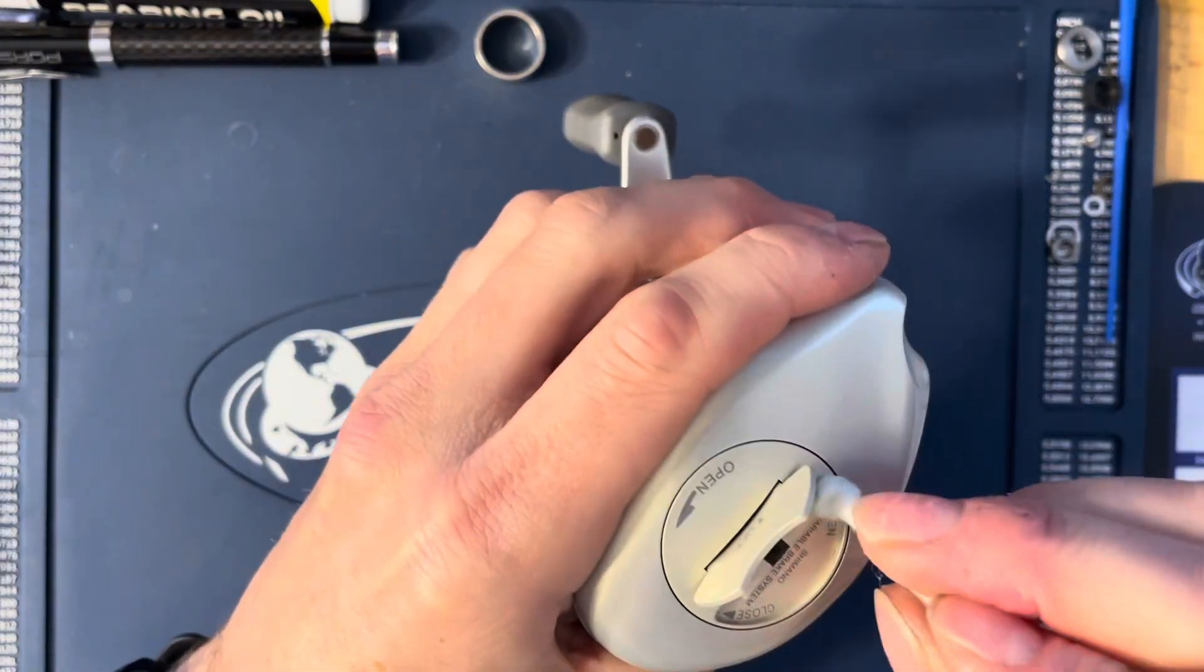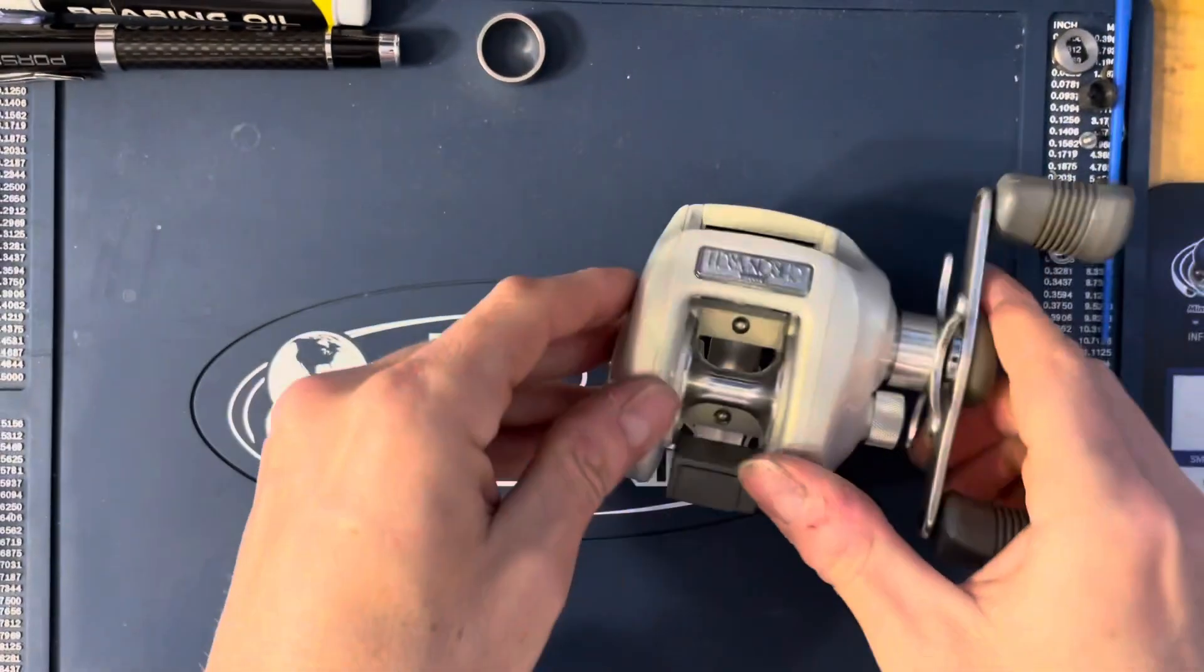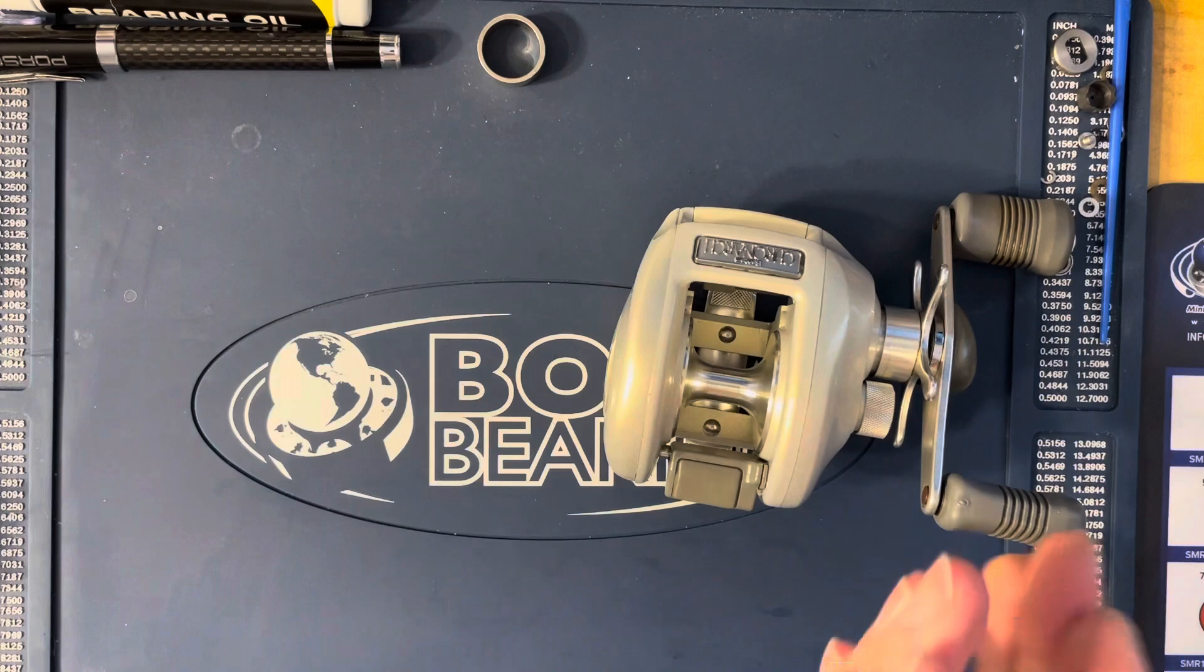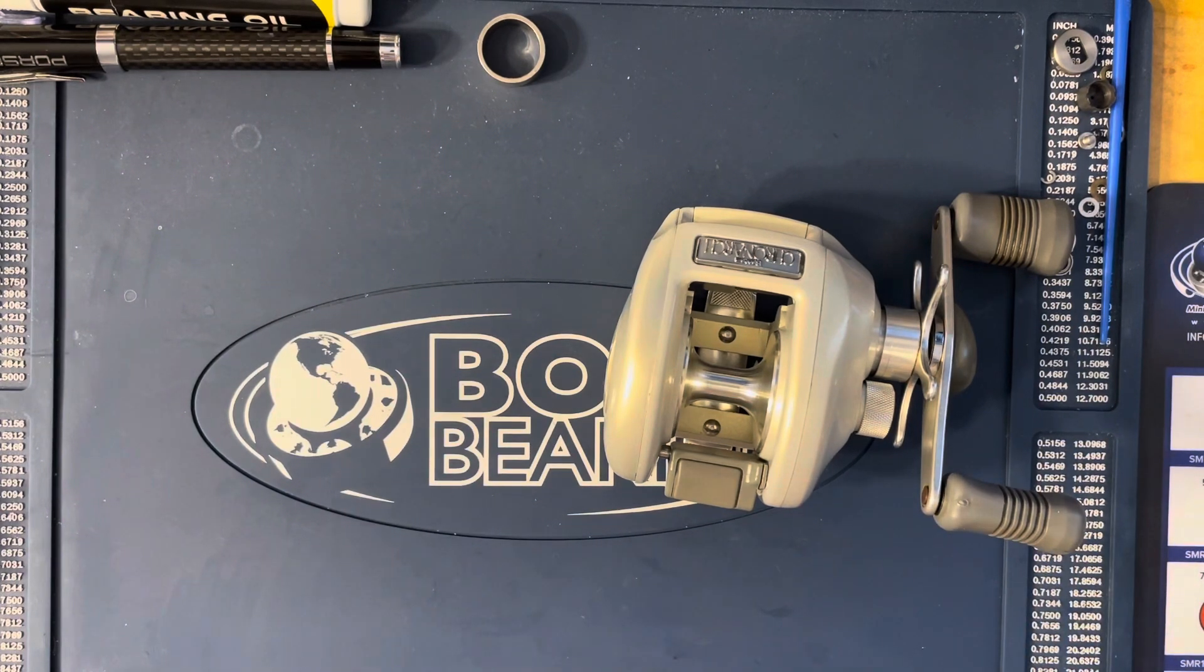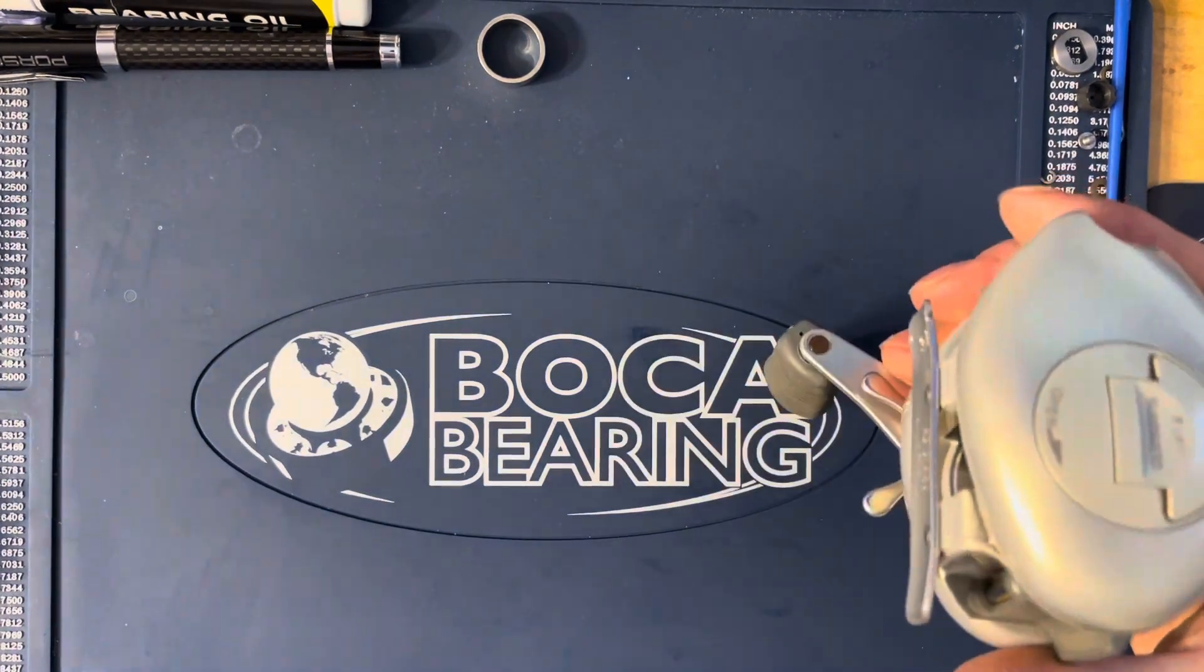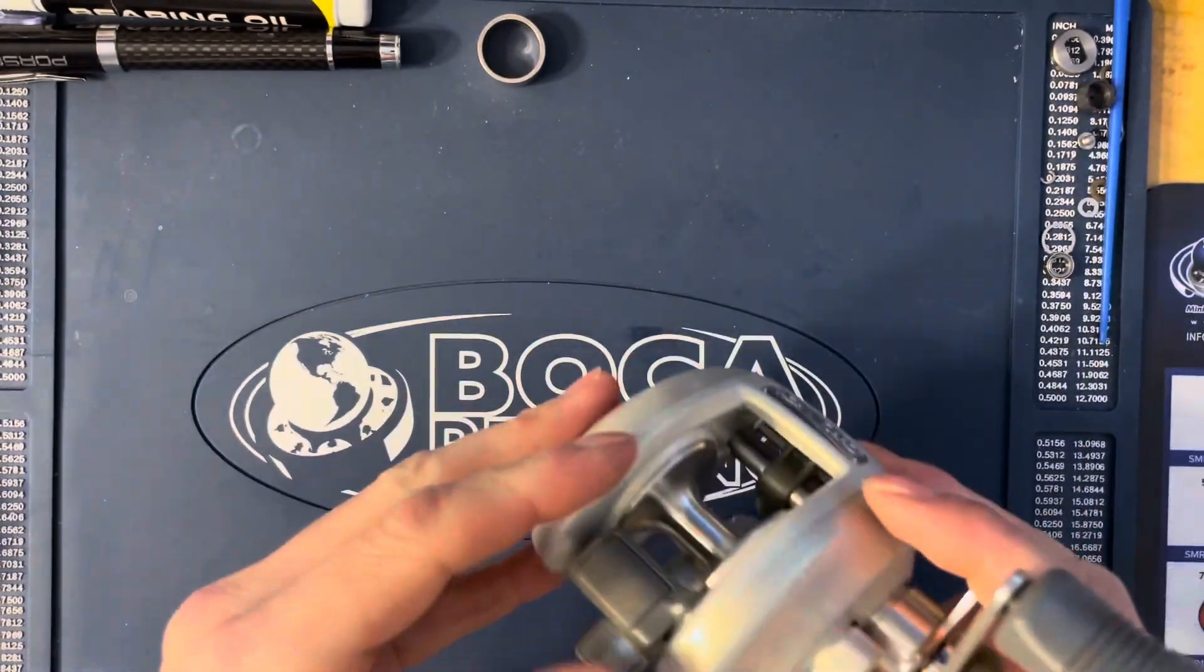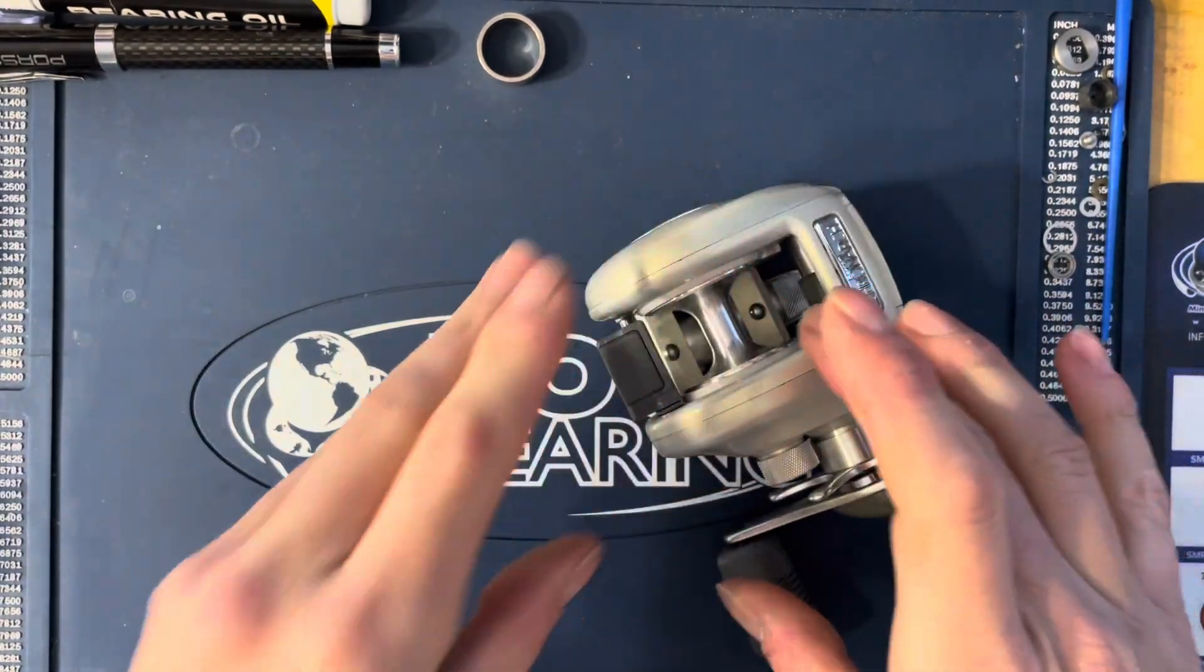When I was a kid I had a Curado, then a Curado Super Free, then I jumped straight to the Cronarch Super Frees. And I had a Calcutta 200 which is an amazing cranking reel, but the Cronarch and the Curados back then were absolute beasts. I think this retailed for 179 or 199.